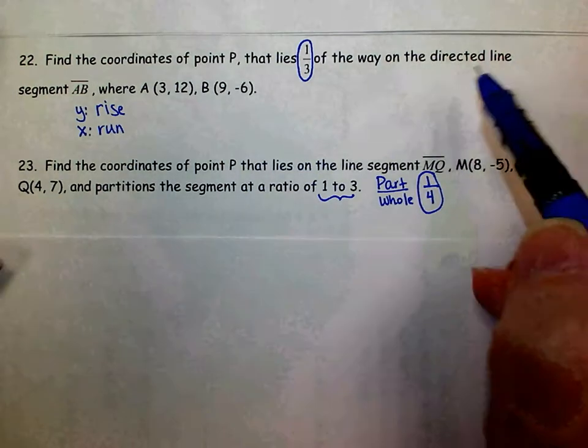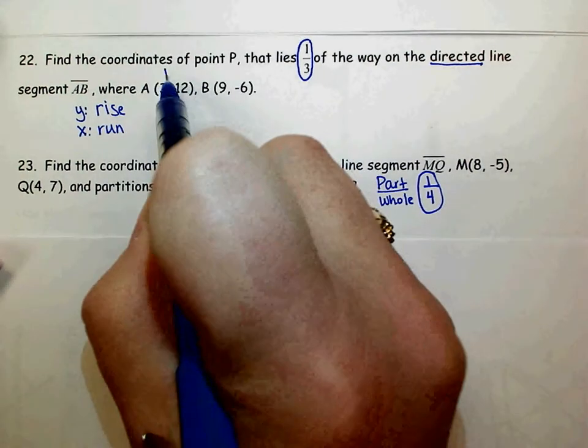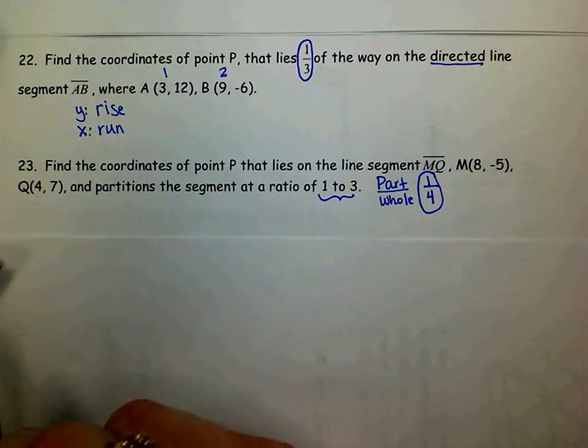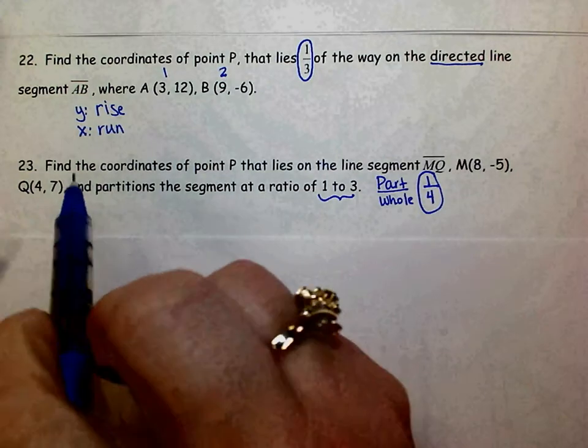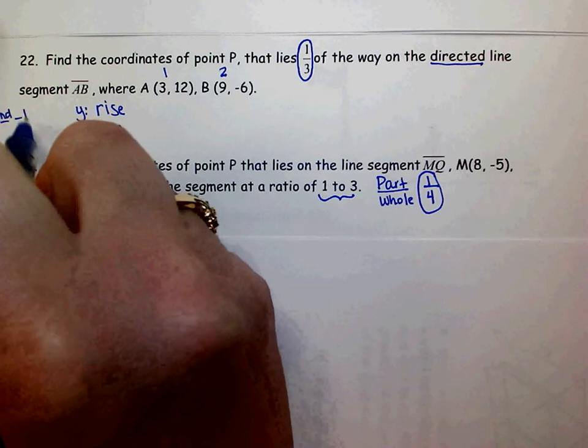Remember, these are directed line segments. We're going in the order from A to B, so A is our first point, B is our second point or our last point. So when we find the rise and run, always do second point minus first point.